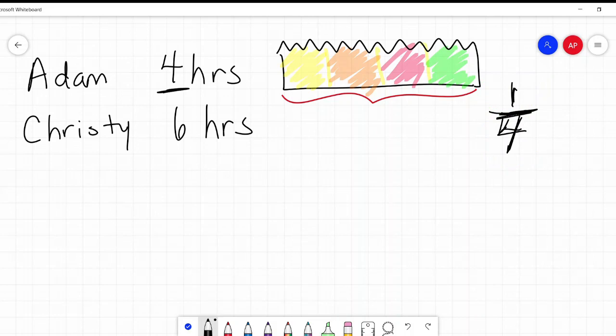Same here, Christy takes six hours, so she paints that whole fence. How much does she paint every hour? We divide by six. She paints one sixth every hour. Okay, so if we have these two numbers. I'm going to rewrite them. So Adam is painting a fourth of the fence an hour. Christy is painting a sixth of the fence an hour. How much are they painting every hour?